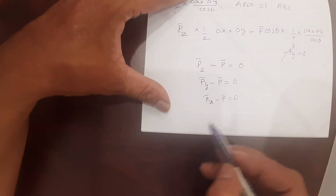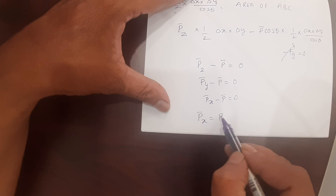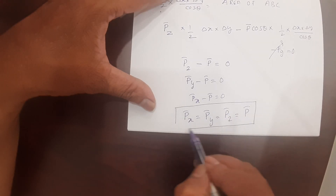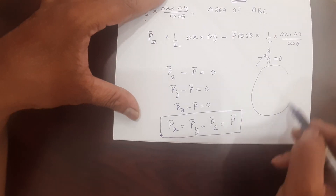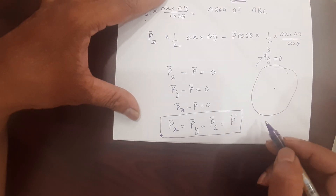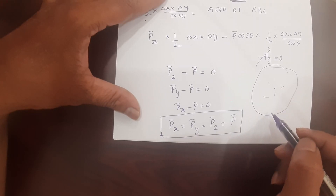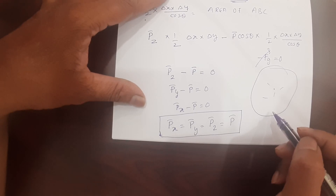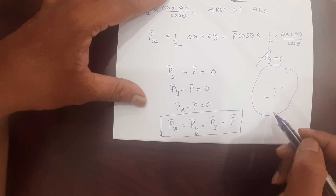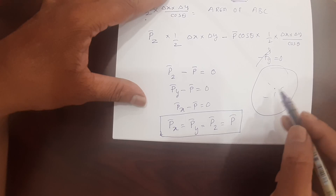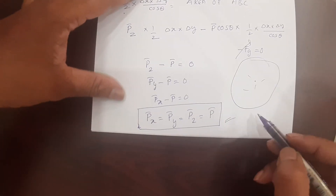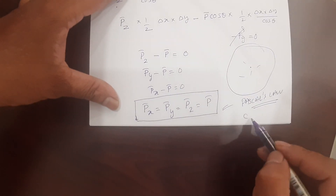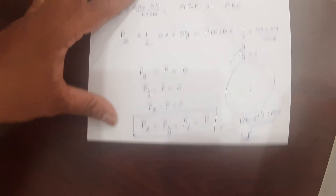Taking all these equations together, it becomes: P-bar-X = P-bar-Y = P-bar-Z = P-bar. This is the meaning of Pascal's law, which states that at any one point in a static fluid, the pressure exerted in all directions is the same. Since pressure equals force per unit area and the area is the same, this holds as long as the fluid is static. This is the proof of Pascal's law, also known as the center of pressure condition.